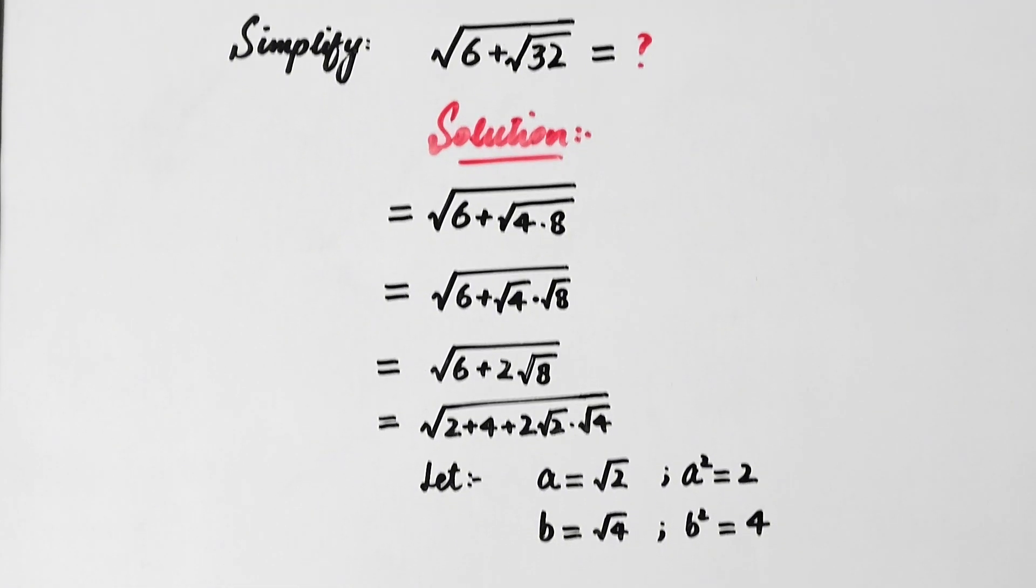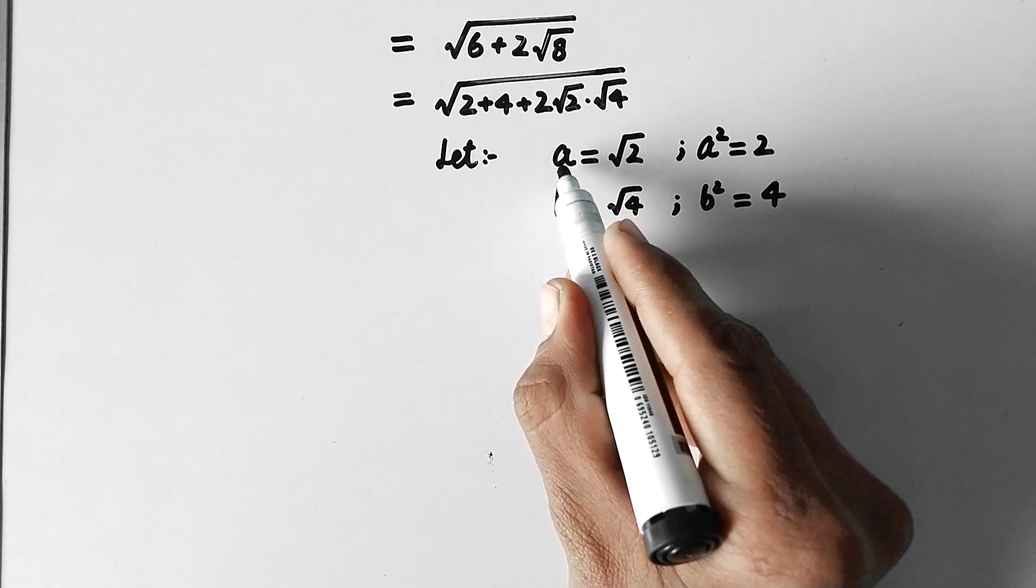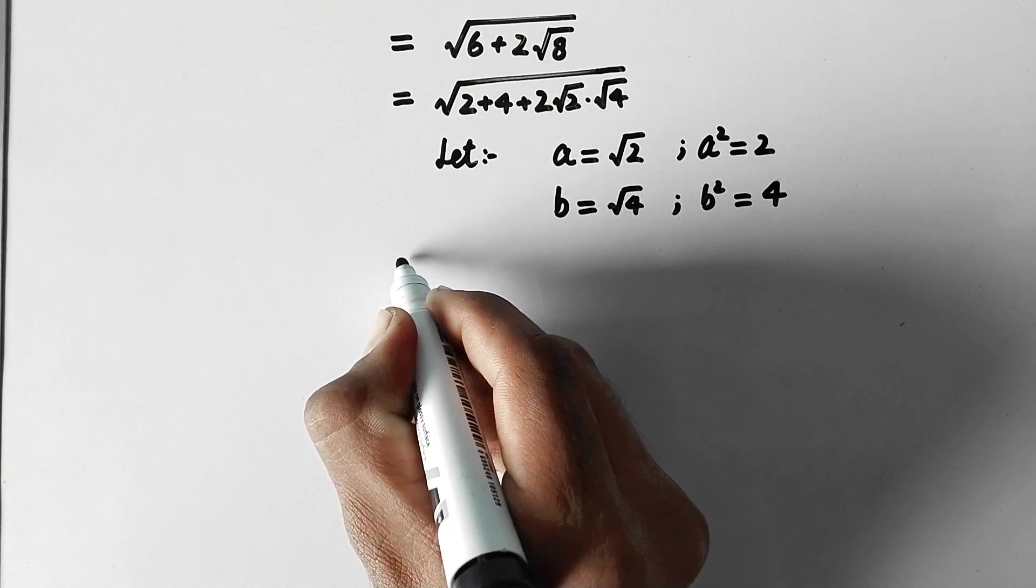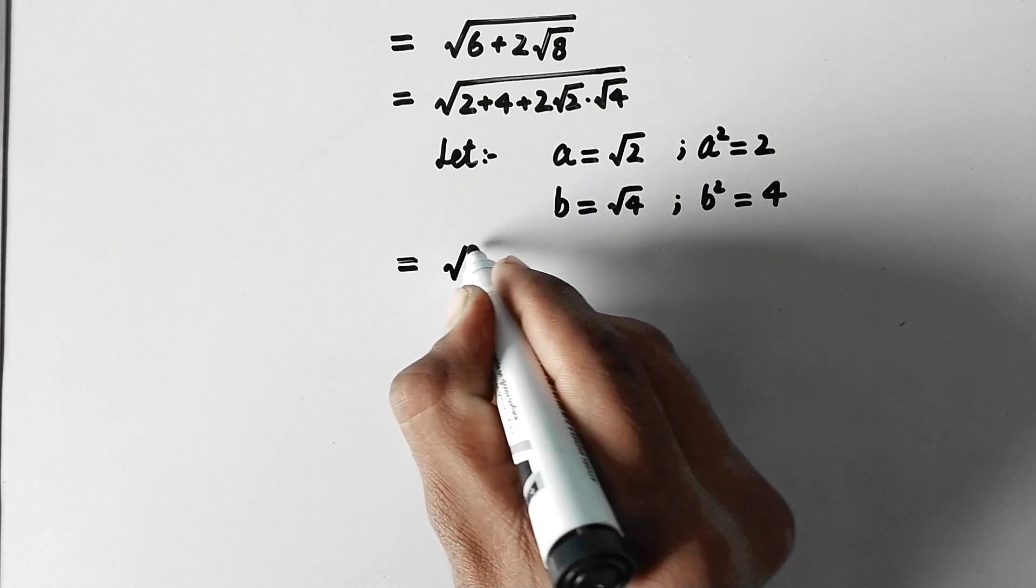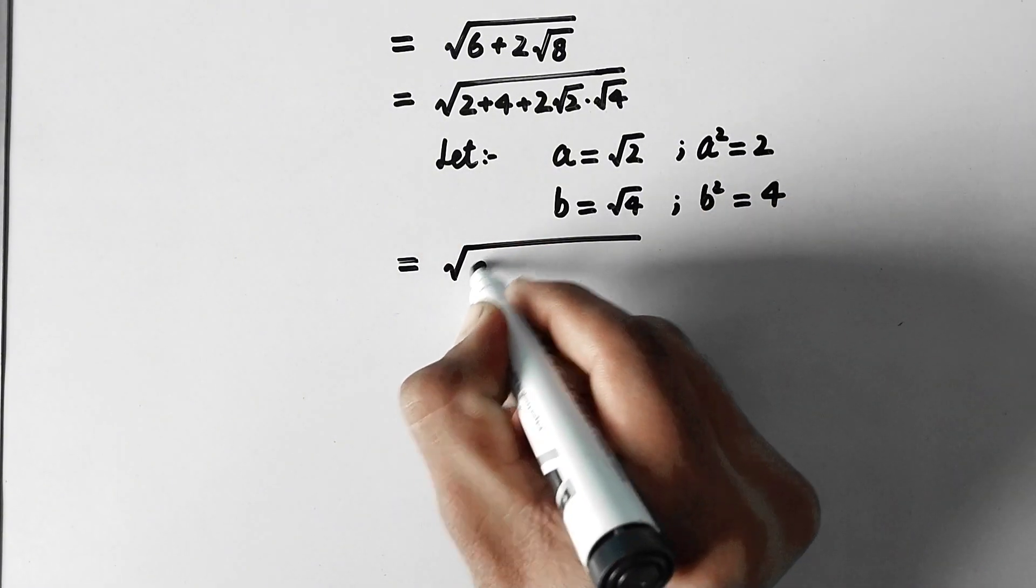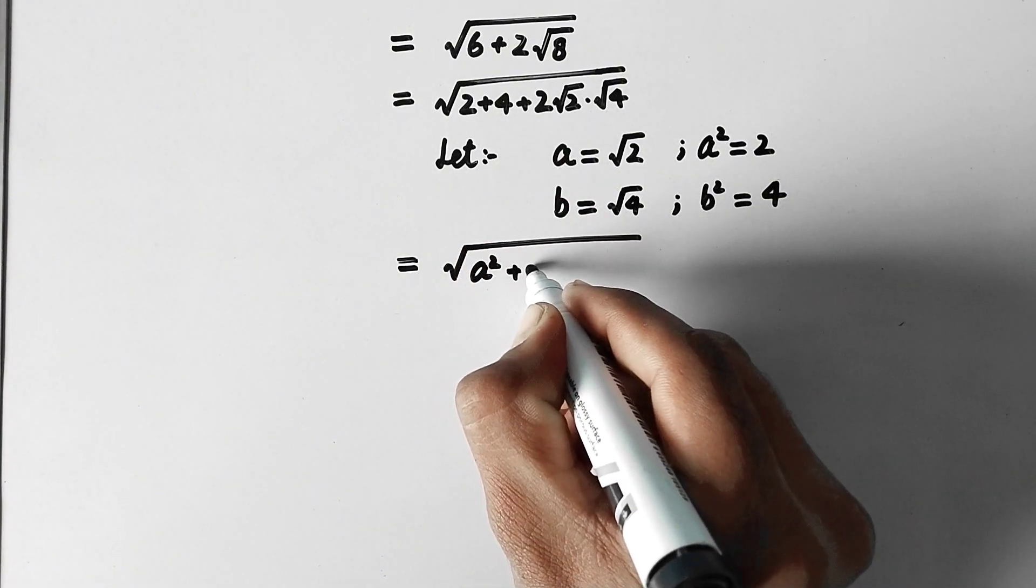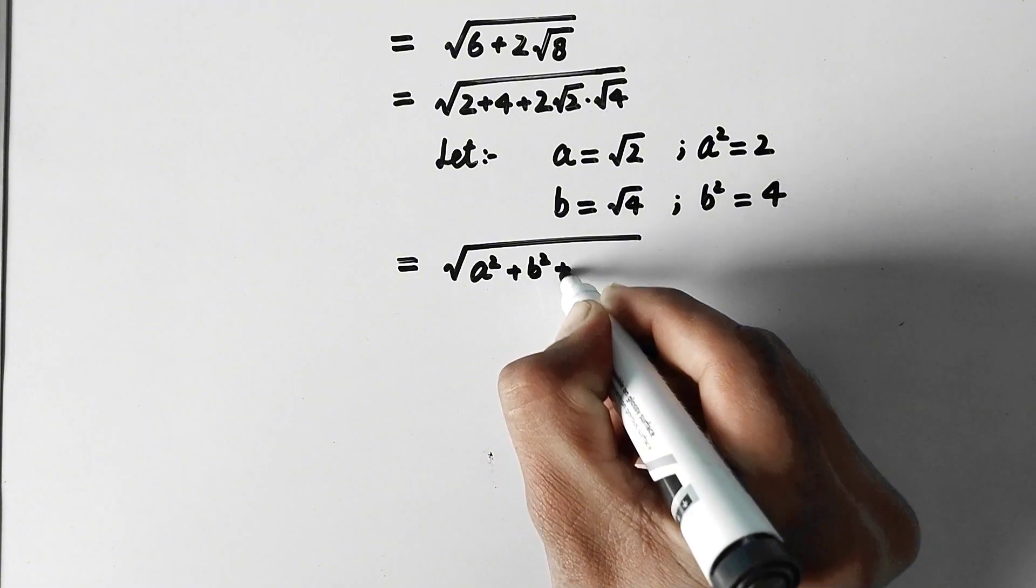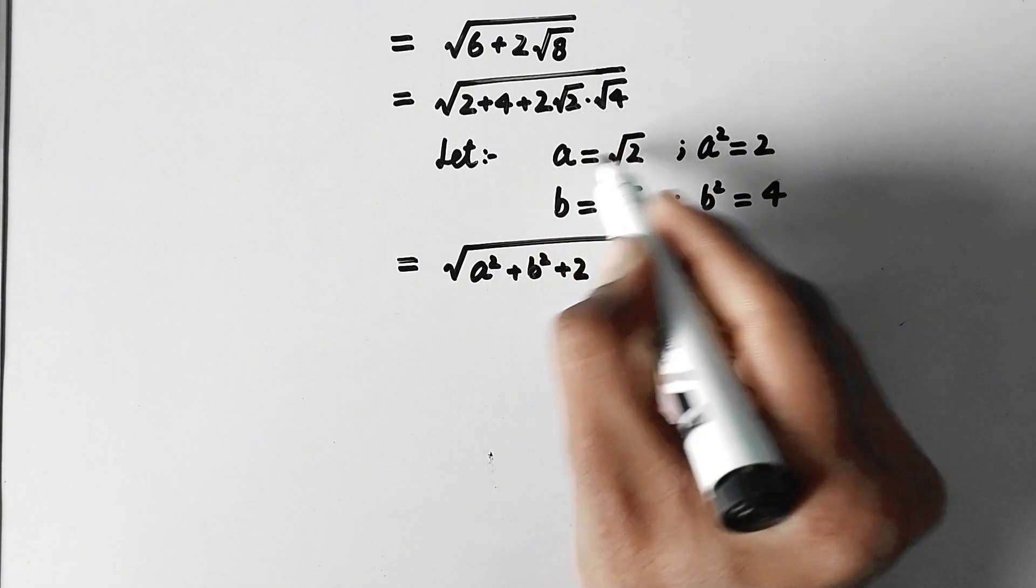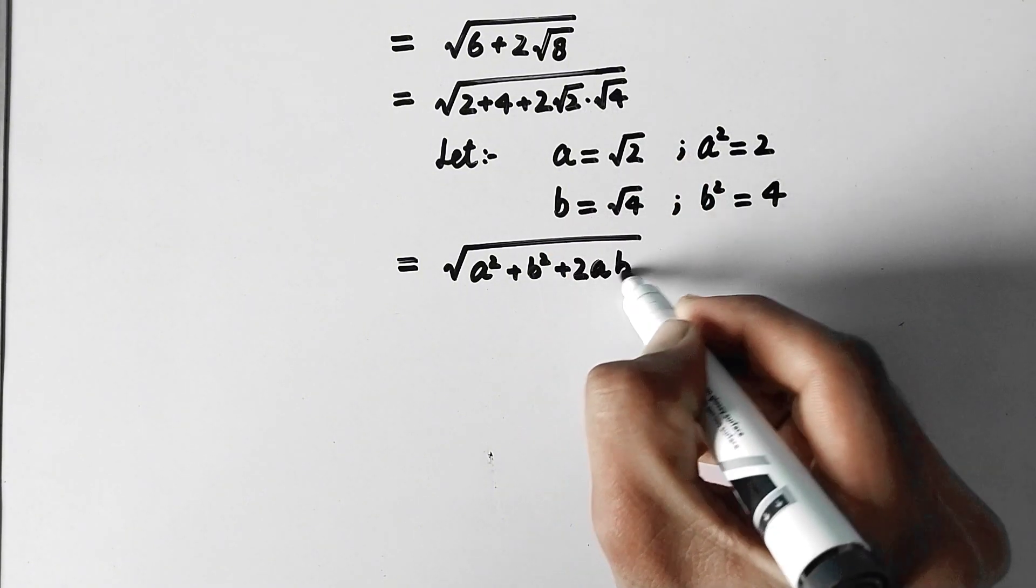So now by substituting the values of a, a², b and b² here, this expression will be equal to √(2 is equal to a², plus 4 is equal to b², plus 2 times √2 is equal to a, times √4 is equal to b).